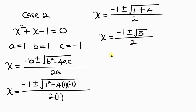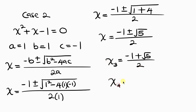So there are two values of x here. The third root is negative 1 plus square root of 5, all over 2. And the fourth root is negative 1 minus the square root of 5, all over 2. We're going to try each of these roots to see which one is the correct answer.